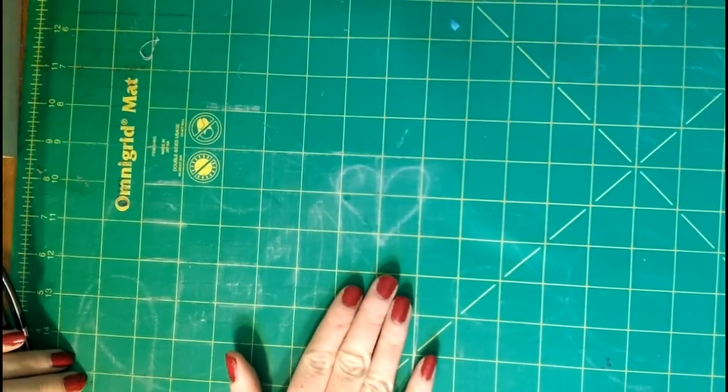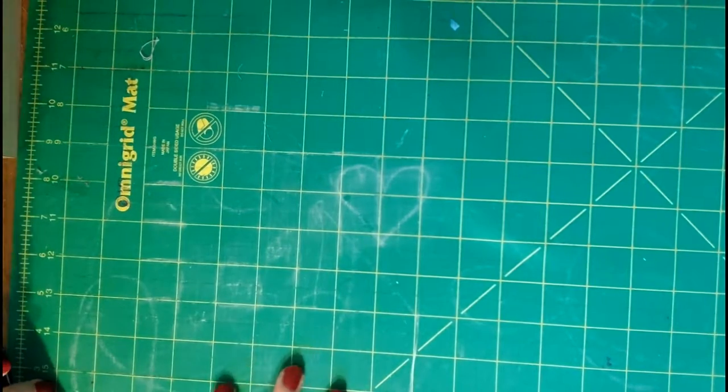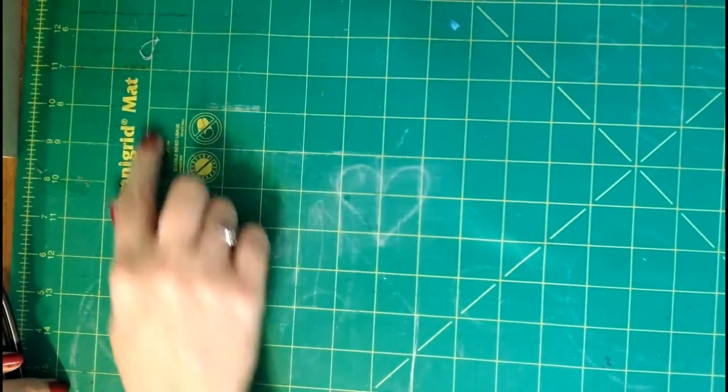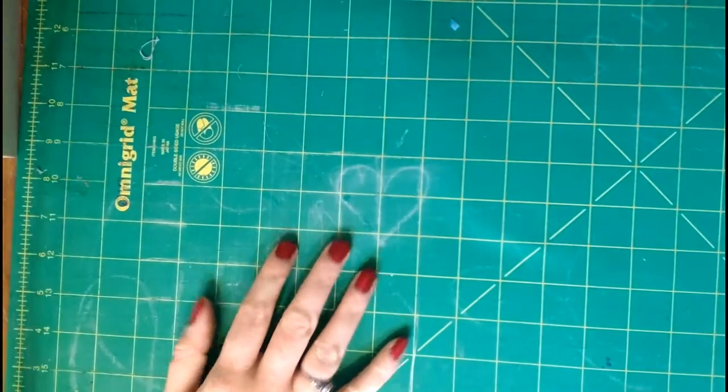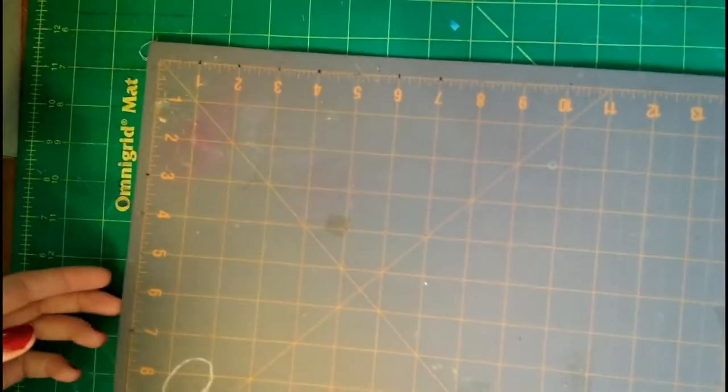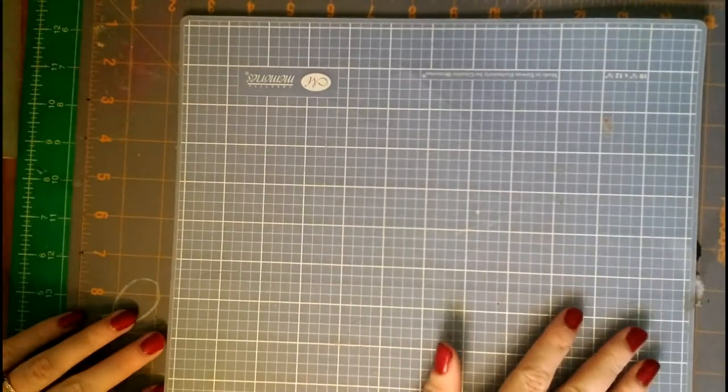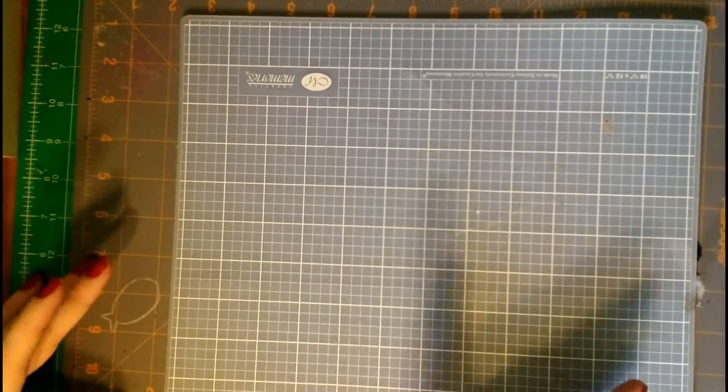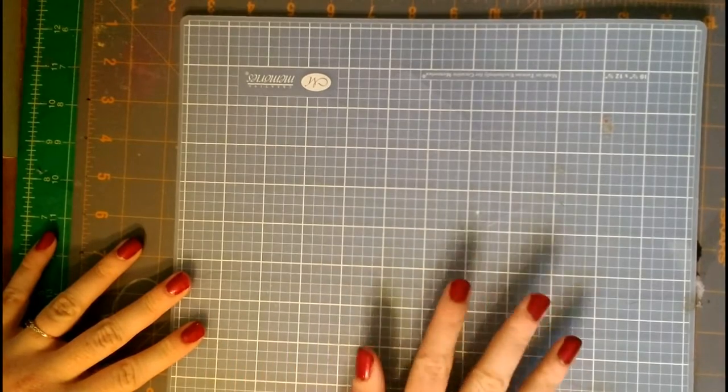Cutting boards. Again, I use an Omnigrid. This one is an 18 by 24 and it's a nice size for all projects. It is self-healing which means the cuts you make in the board from your rotary cutter will close up. This next one is the Fiskars. And this one is just a little paper cutting board.